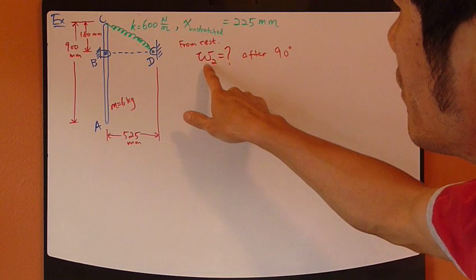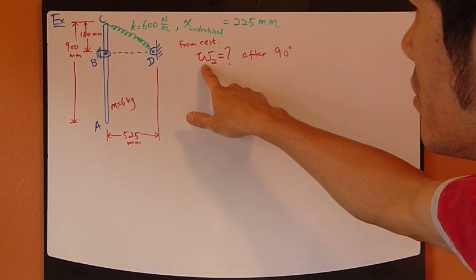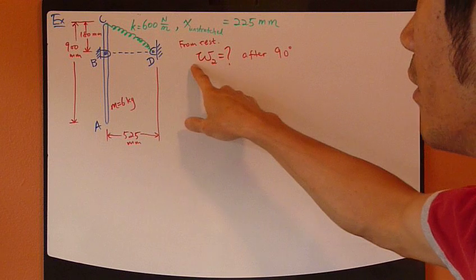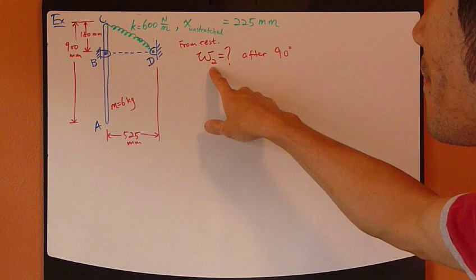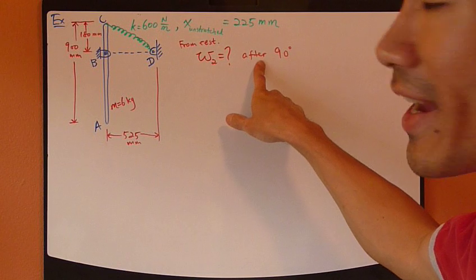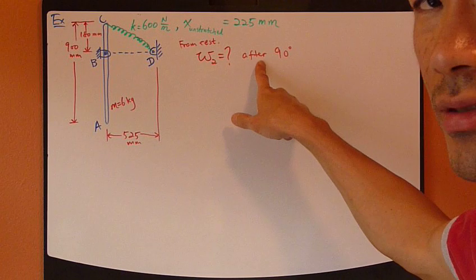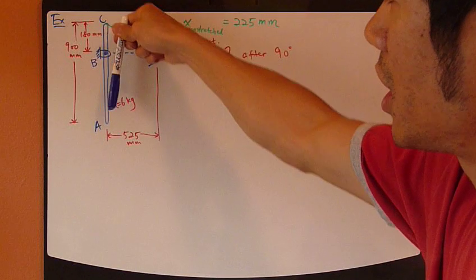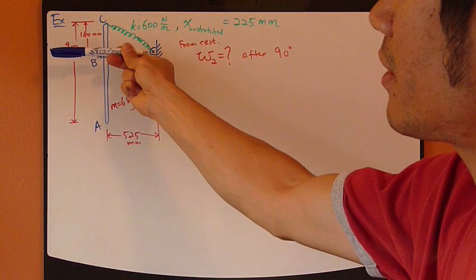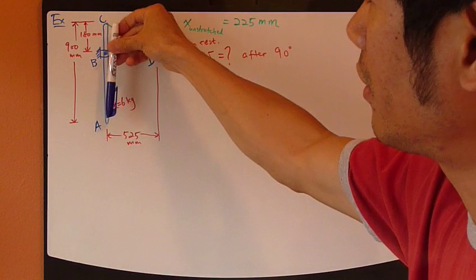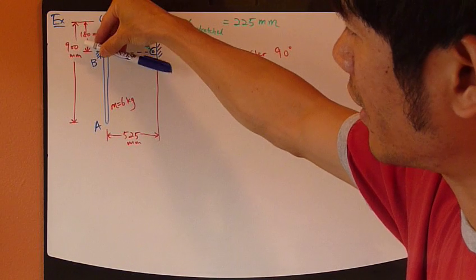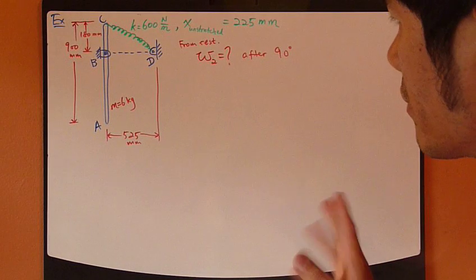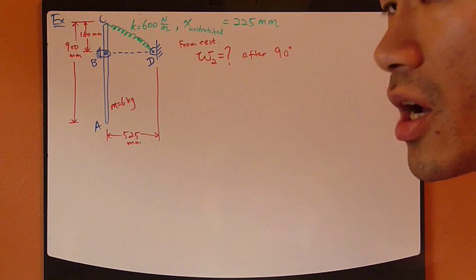You're asked to find the final angular velocity of the rod, omega_2, after it has rotated 90 degrees. Again, it could be going clockwise 90 degrees, like this, or after 90 degrees going the other way.